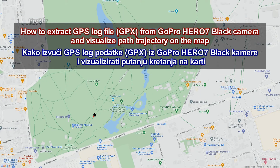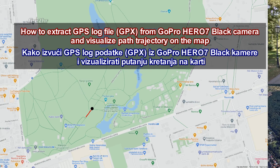How to extract a GPS log file from a GoPro Hero 7 Black camera, and visualize the path trajectory on the map.